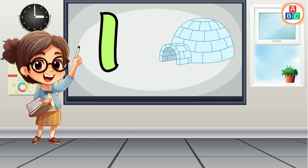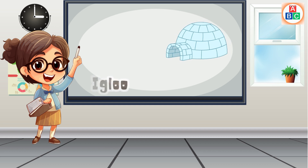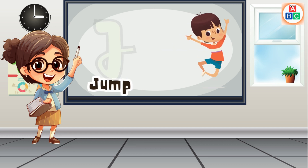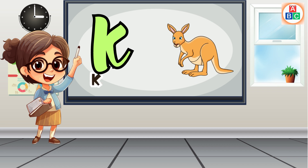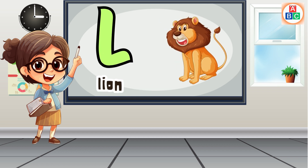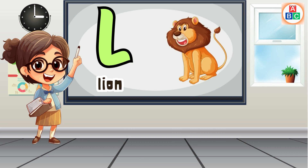I is for igloo, i-i-igloo. J is for jump, j-j-jump. K is for kangaroo, k-k-kangaroo. L is for lion, l-l-lion.